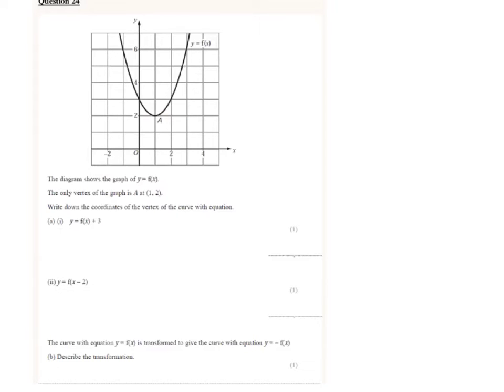And we're asked to give the coordinates of the vertex if the function has been moved up by 3. So if we move this graph up by 3, then what was at 1, 2 will now be at 1, 5. So our vertex is moved to 1, 5.